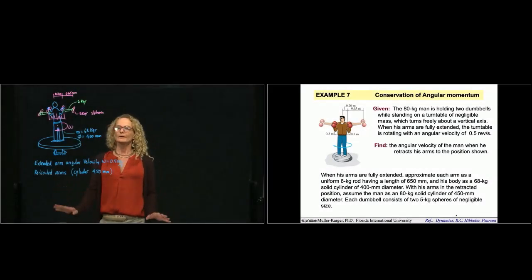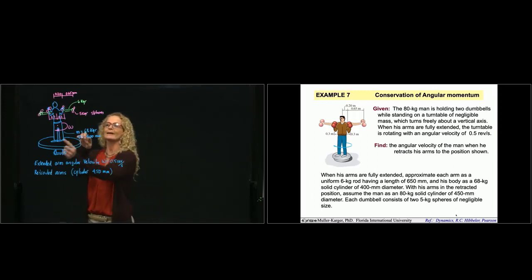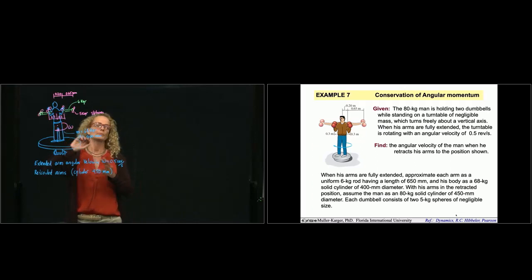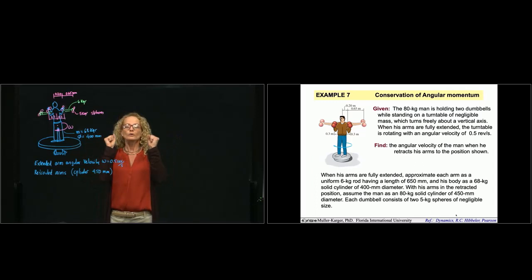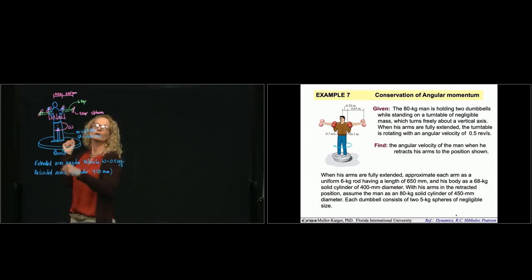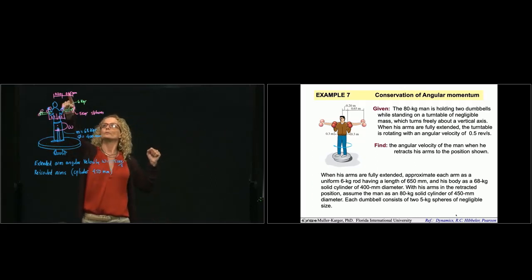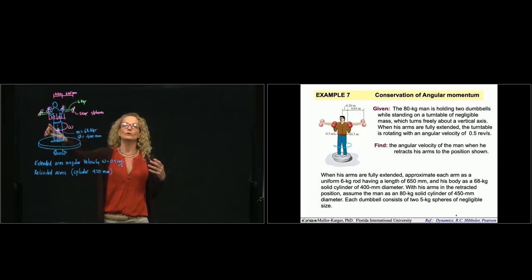In this problem we have a man that is 68 kilograms, and the person is standing on a platform that is allowed to rotate. That person holds the dumbbells and is spinning at one angular velocity. As soon as he extends the arms to 0.65, then it has a different inertia, so this angular velocity will change.